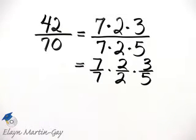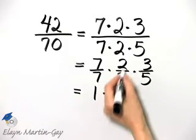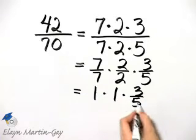And what is 7 over 7? Well that simplifies to 1. So this is 1. This 2 over 2 is 1. And then of course I have 3 over 5.